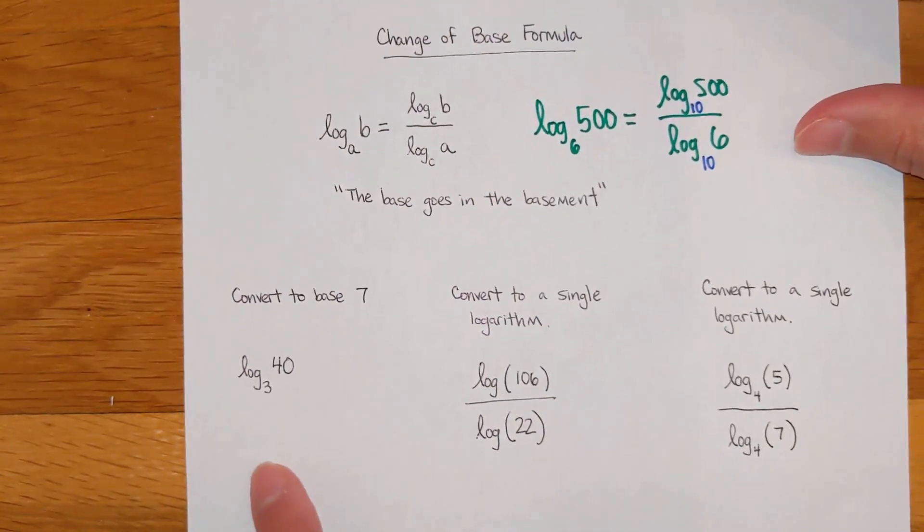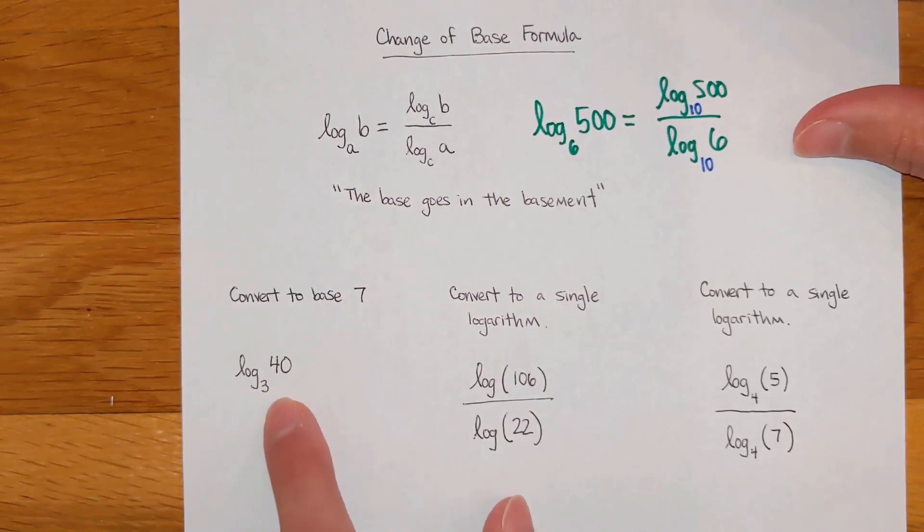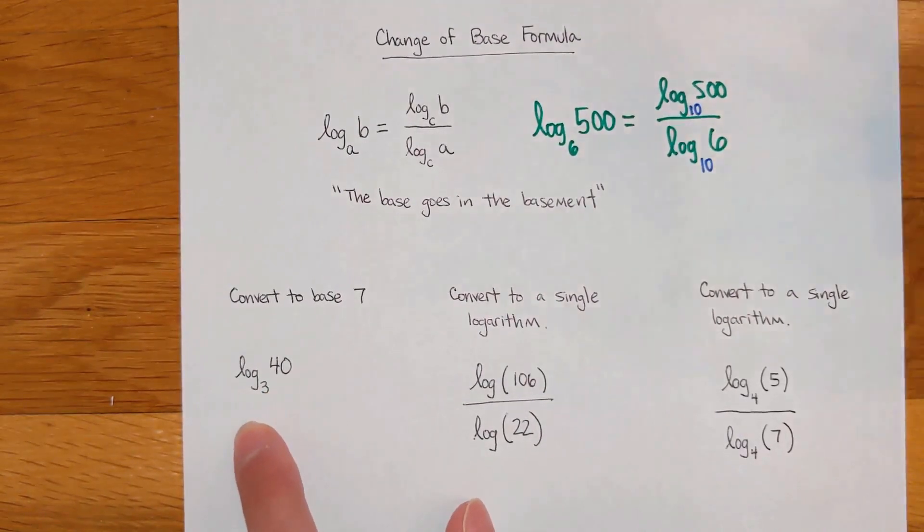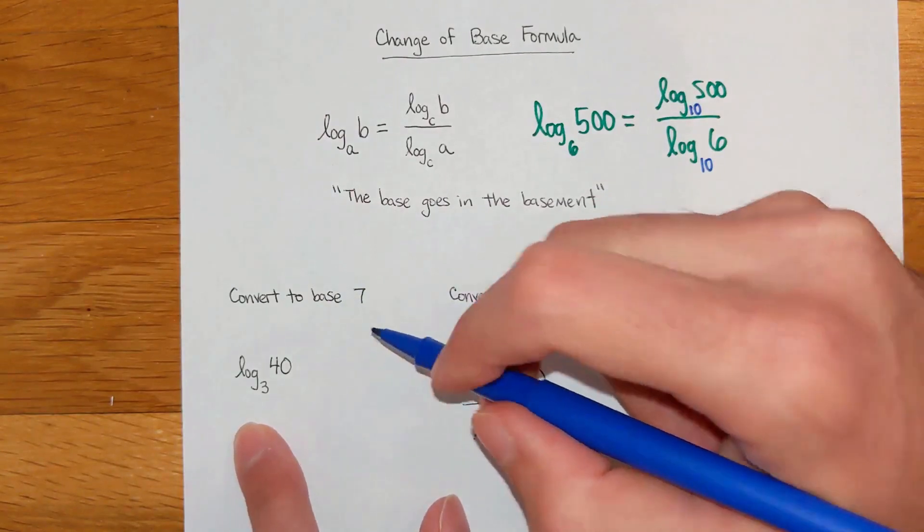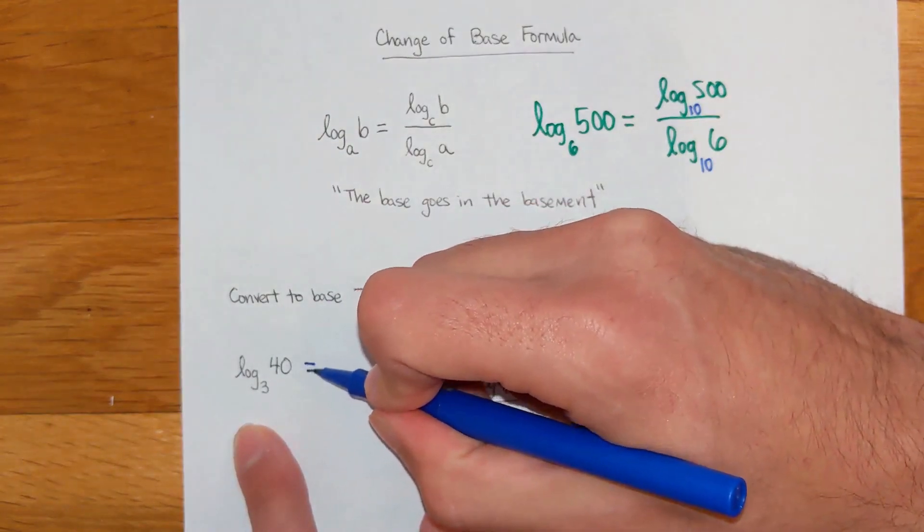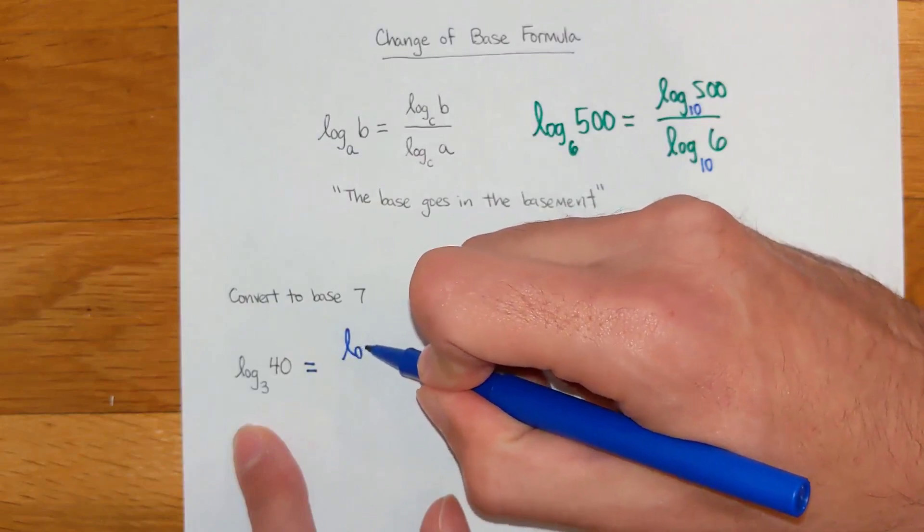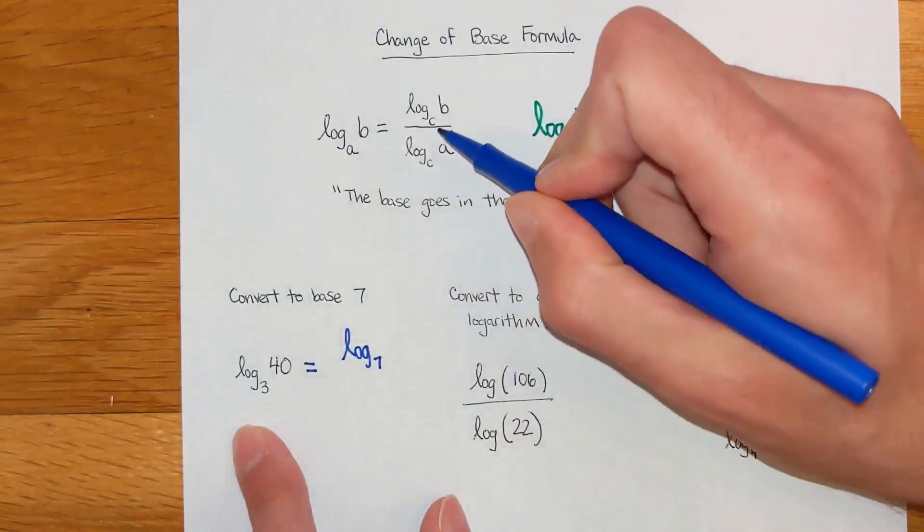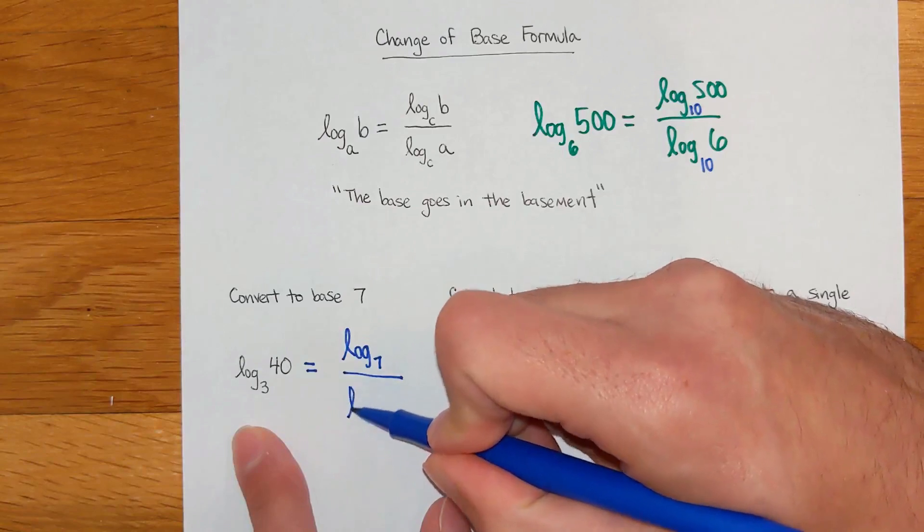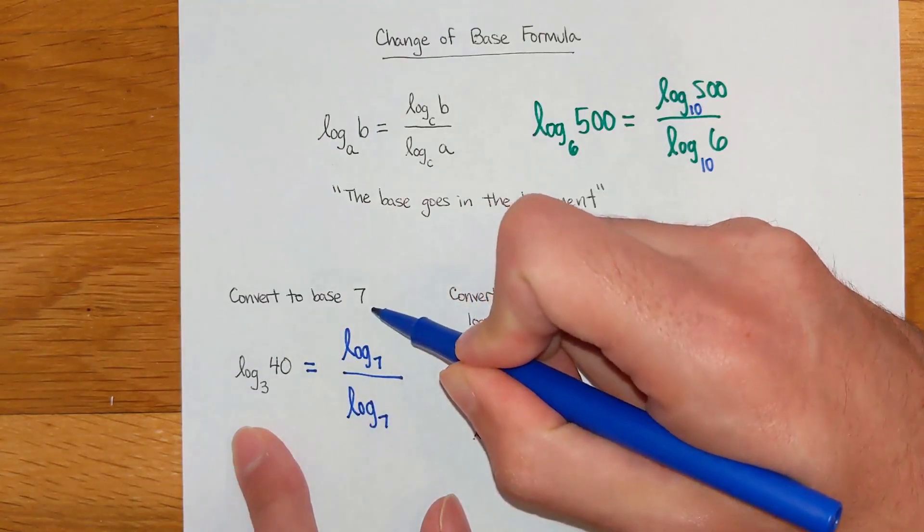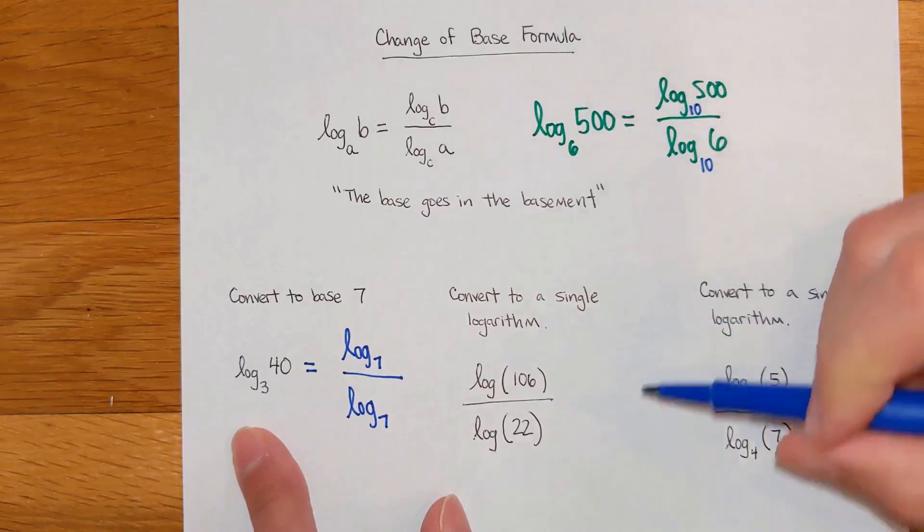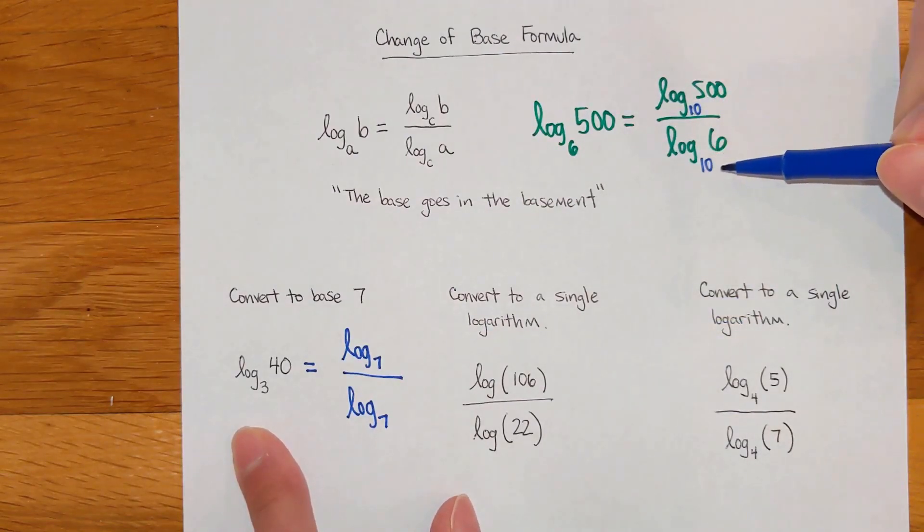So the change of base formula allows you to manipulate logs and put them in whatever base you feel like. They say on this first problem, for whatever reason, they want it in base 7. So I'm going to rewrite this single log as a fraction. And my new base, my C for this, is going to be base 7, because that's what they told me to do in the instructions. Most of the time, if you use this, you're going to put them in base 10, because base 10 is just so easy to work with.